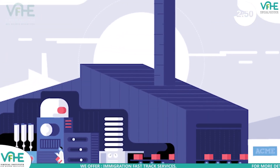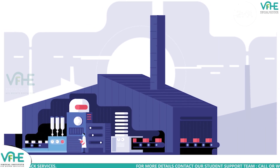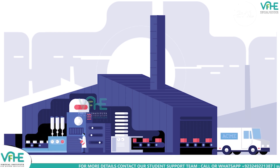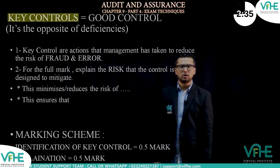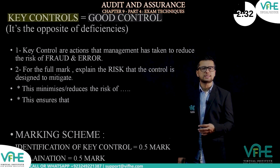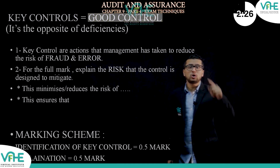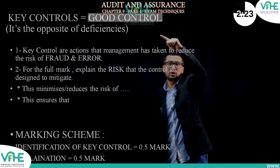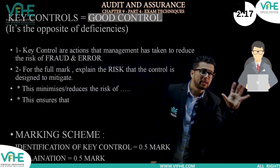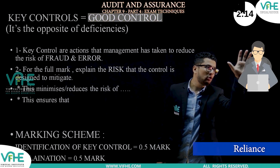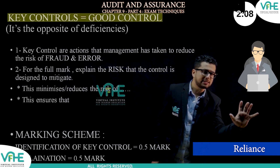For example, if there is no security guard outside a factory, identifying that earns 0.5 marks. Now regarding key controls — a key control means a good control, specifically one on which the auditor will seek to place reliance. If as an auditor you are going to place reliance on a particular control, it means that control is a key control.